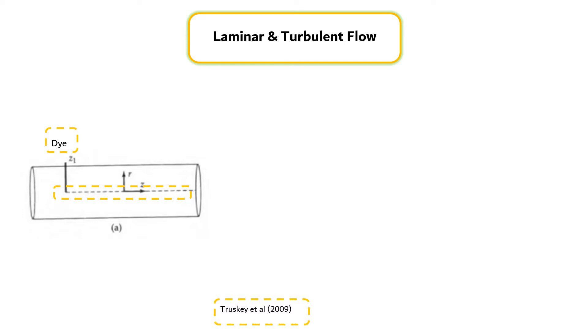The width of the dye broadens due to molecular diffusion as the dye moves farther downstream. Since this is a steady flow, the dye path line traces the fluid stream line.